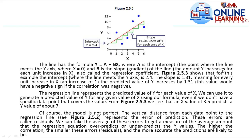The slope represents the amount y increases for each unit increase in x. The slope is equal to plus 1.31 units of y for each unit of x — also called the regression coefficient. Figure 2.5.3 shows that for this example, the intercept where the line meets the y-axis is 2.4.